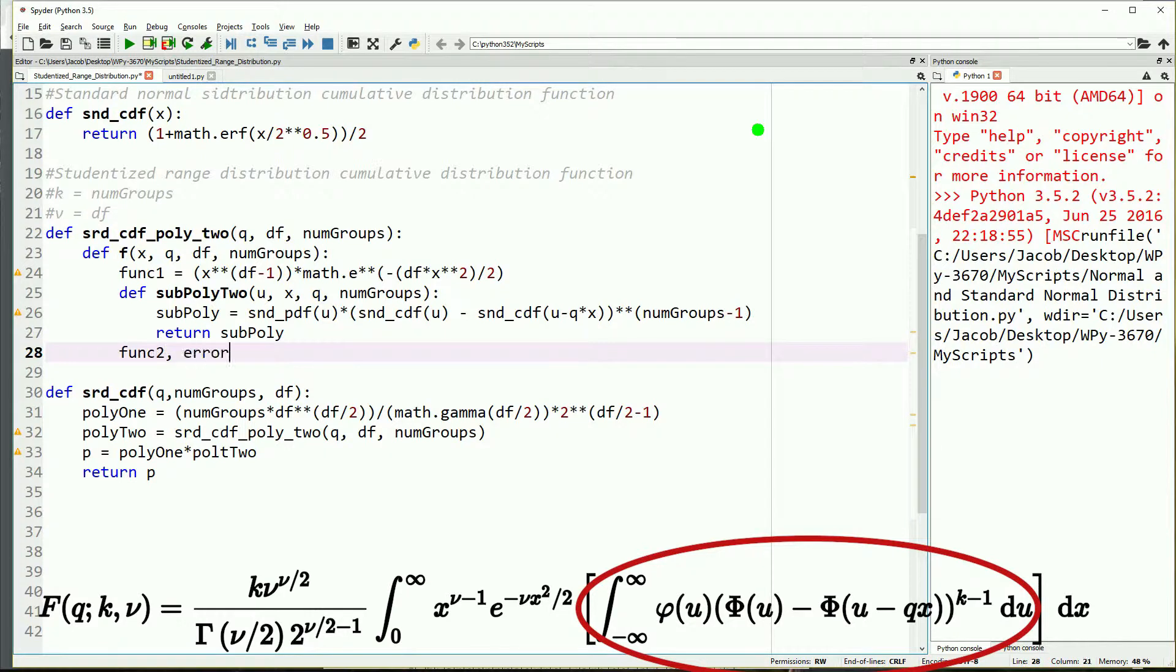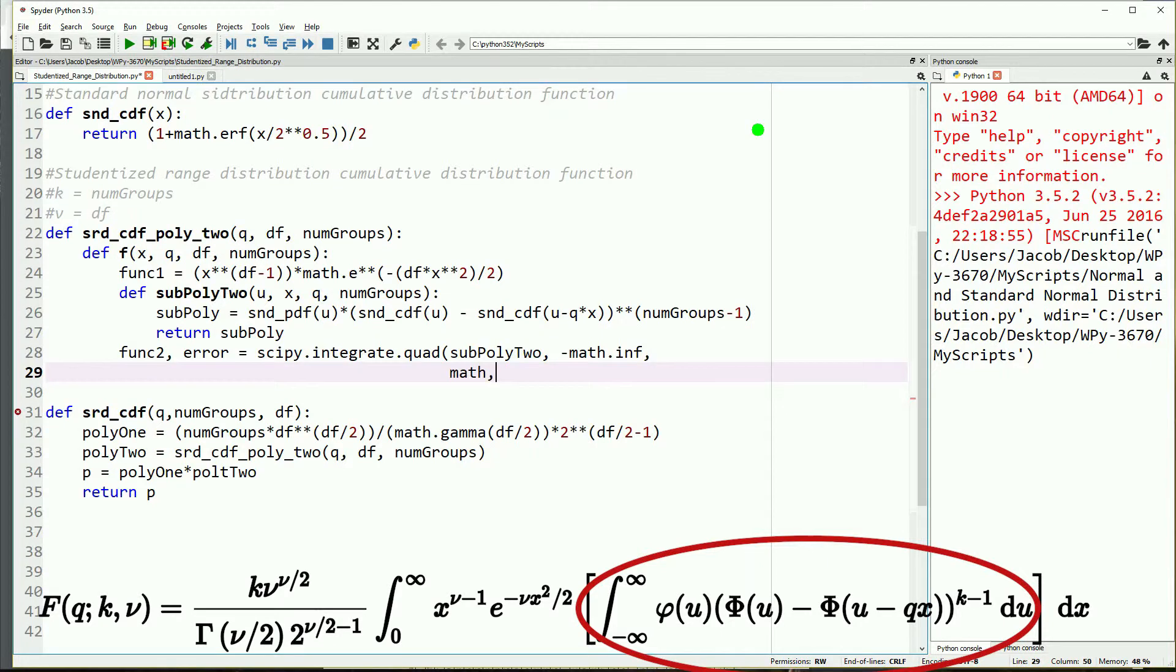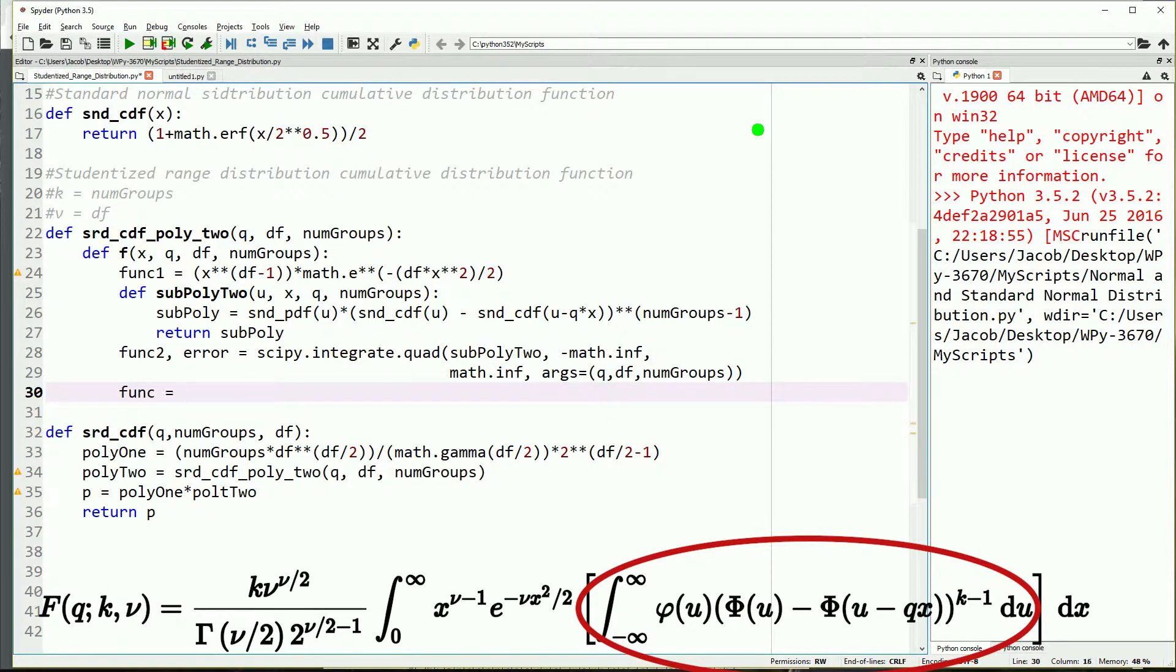Now we'll take our func2 and our error, and this will be scipy.integrate.quad. It will take our sub poly 2 function and it will be done from negative infinity to positive infinity, and it will take the additional arguments of x, q, and the number of groups. In this case, float infinity, negative float infinity, or math.inf are the same - you can play around with either. We'll just say func equals func1 times func2 and then we will return func.